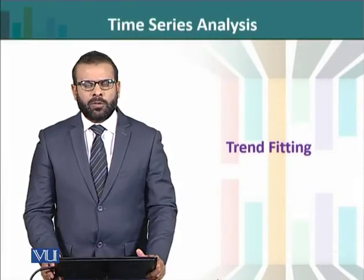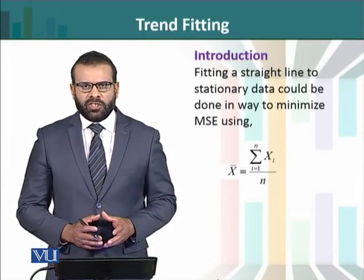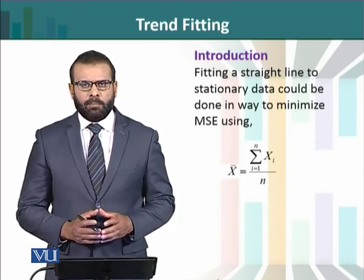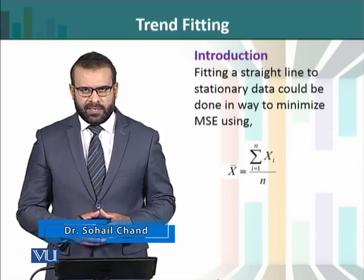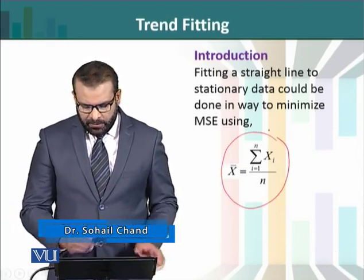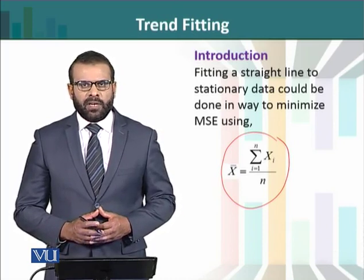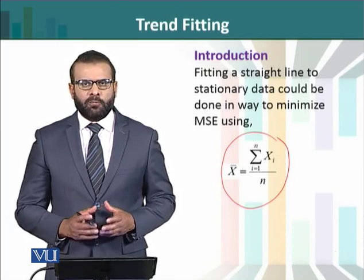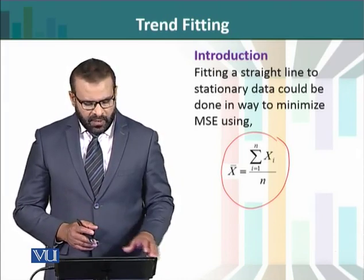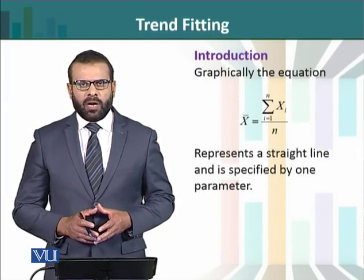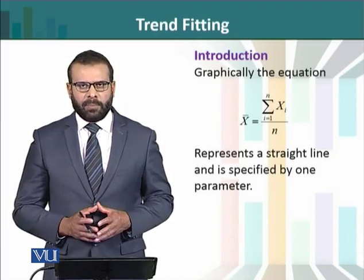In this session we will talk about fitting a trend model to an observed time series. If we have a stationary time series — a time series with a horizontal pattern — then we can fit a model based on the mean value of the data, minimizing the mean square error using the mean function. For a stationary time series, the forecast model is the mean value of the data, based on a single parameter x-bar.